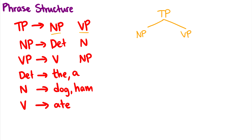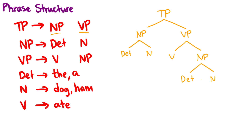If we have an NP, we can break it into a determiner and a noun. If we have a VP, we can break it into a verb and an NP. And then we can use that NP rule again to break that noun phrase into a determiner and a noun. Then we can use our lexical rules, such as determiner going to 'the' or 'a', and we can make a sentence.